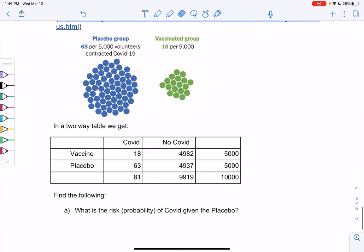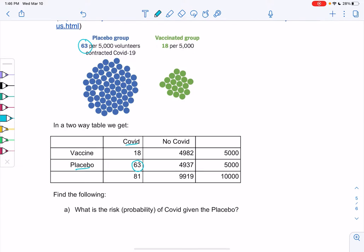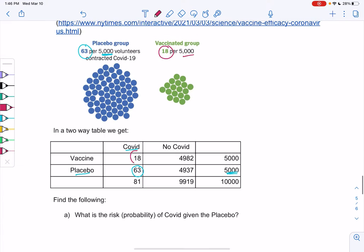So I turned it into a two-way table. We had 63 in the placebo group catch COVID. So that's the overlap for placebo and COVID out of 5,000 total in the placebo group. And then we had 18 out of 5,000. So 18 had COVID in the vaccine group. So that's the overlap, and then again out of 5,000.